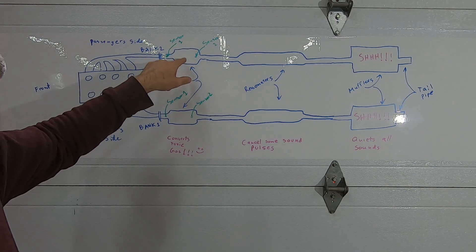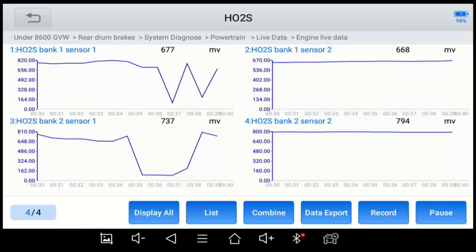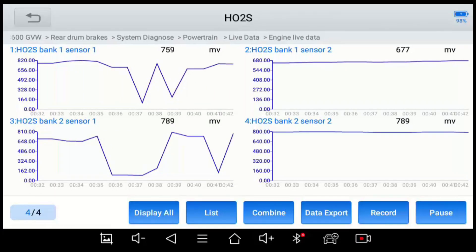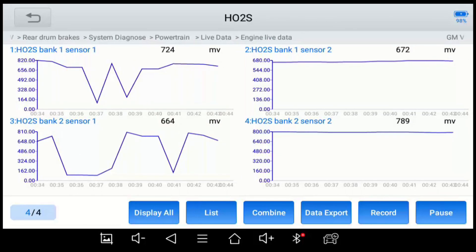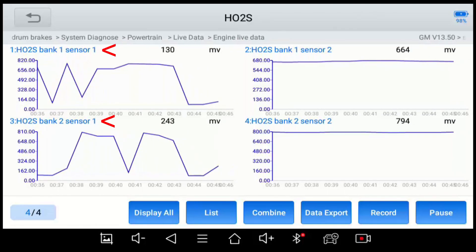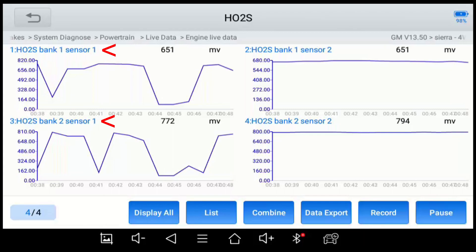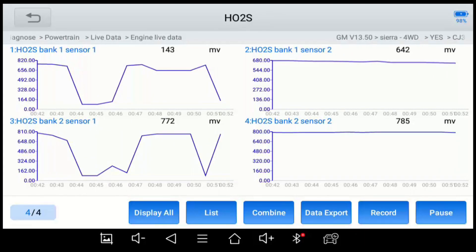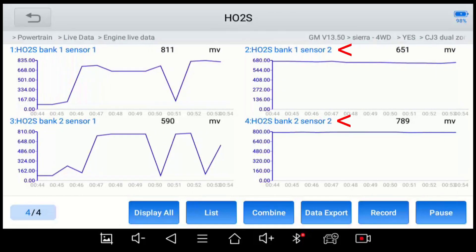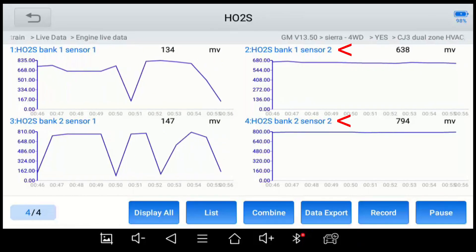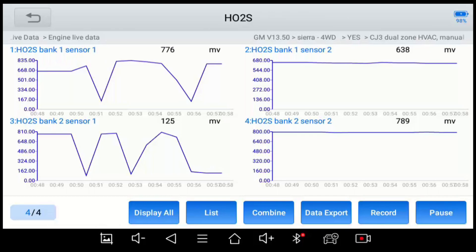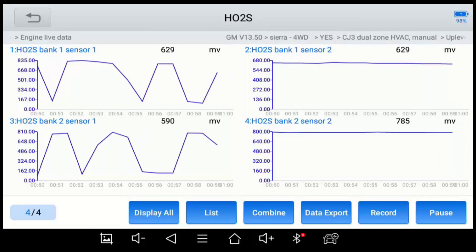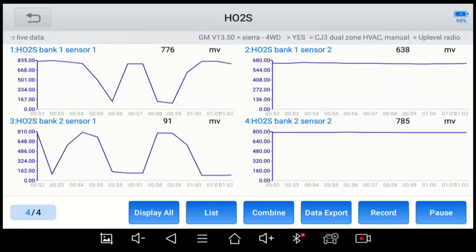Okay so here we are at idle, we've been idling for about five minutes, the engine's warmed up, and you can see the upstream sensors fluctuate pretty rapidly between 100 millivolts and 800 millivolts. And then downstream of the cat it's pretty stable. So what does that tell us? It tells us that the cat is functioning properly and it's smoothing out the oxygen level in the exhaust.